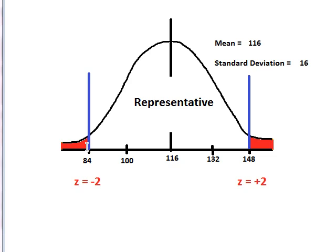So 84 is two standard deviations below the mean, so it's a z-score of negative 2. 148 is two standard deviations above the mean, that corresponds to a z-score of positive 2.